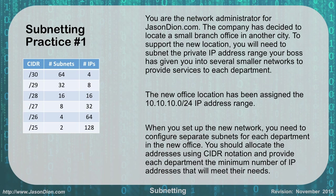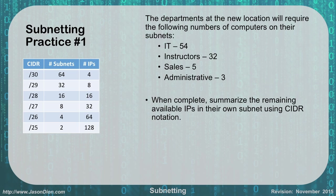The new office location has been assigned a 10.10.10.0/24 IP address range, which gives you 256 IPs. When you set up the new network you need to configure separate subnets for each department in the office. You should allocate the addresses using CIDR notation and provide each department the minimum number of IP addresses that will meet your needs. The departments at the new location will require the following number of computers on their subnets.